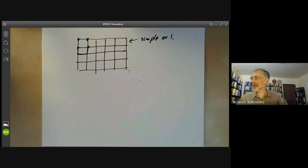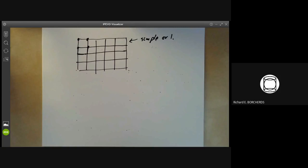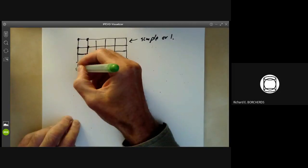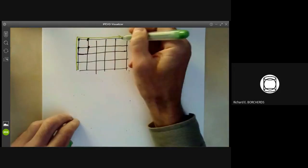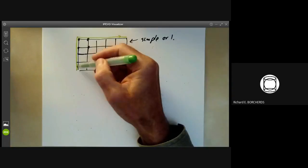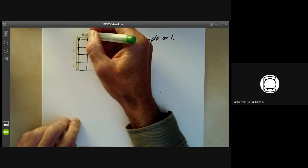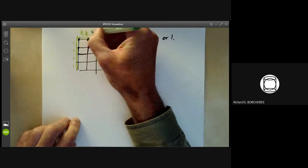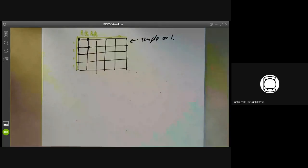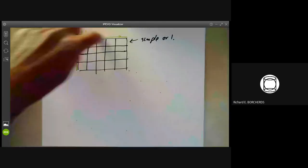And we can imagine a taxi cab wandering through this town. And the taxi cab is going to go from this corner to this corner. So, for instance, it could go along there. And as the taxi cab goes along, we look at the different quotients it passes through. So this taxi cab is going to pass through 1, 1, 1, 1. And then it's going to pass through these quotients B1 over B0, B2 over B1, and so on. So this taxi cab route gives us the second composition series.